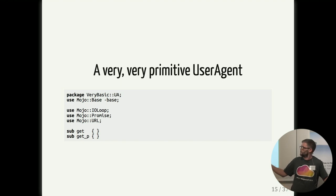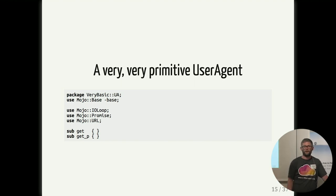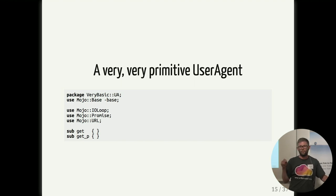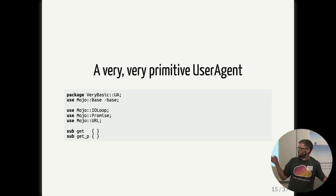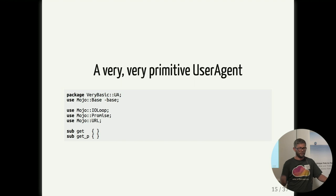The start of the module is mostly boilerplate - you define a package, import the modules you need, and define two methods. The first method, get, will perform both the blocking and non-blocking versions, while get_p will return a promise that you can use for fulfillment or rejection later on.